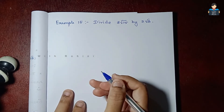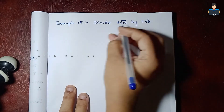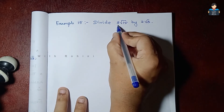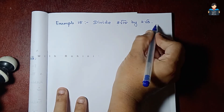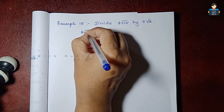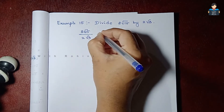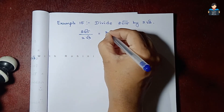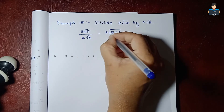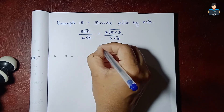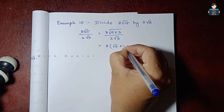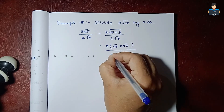8√15 divided by 2√3 — these are two irrational numbers. We split √15 as √5 × √3. So we have 8 × √5 × √3 divided by 2√3. The √3 cancels, giving 8 × √5 ÷ 2 = 4√5.